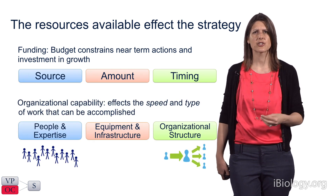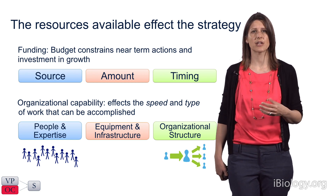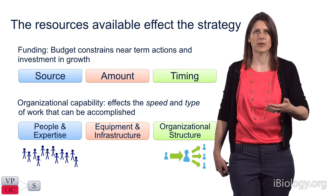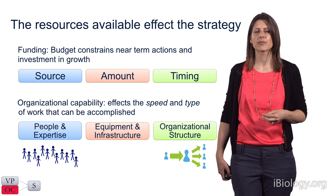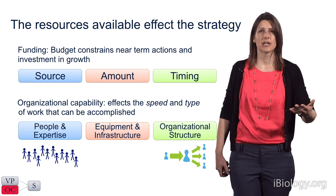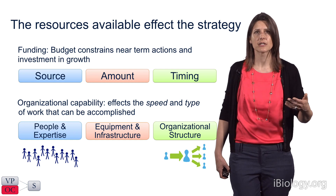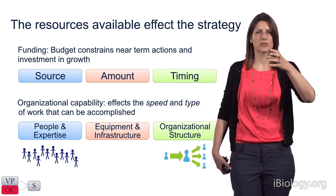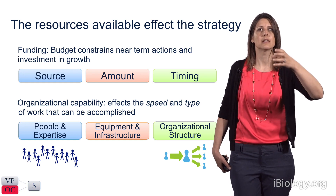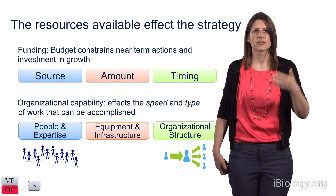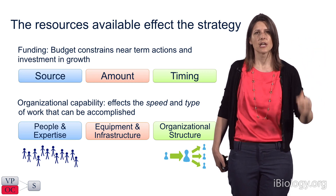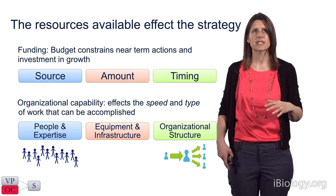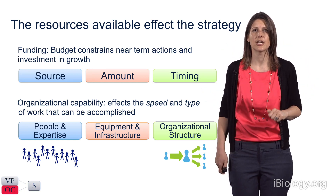Second, organizational capability is the capacity of the enterprise to reach its goals given the resources it has built, affecting the speed and type of work that can be accomplished. I've broken this into three parts: people and their expertise, including their ability and capacity to meet goals; equipment and infrastructure; and organizational structure — how many senior leaders versus technicians exist and how they are structured to meet goals. Think of this as the framework within which an organization accomplishes its strategies.